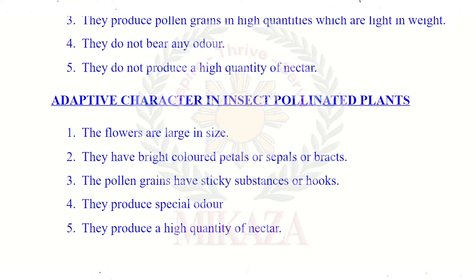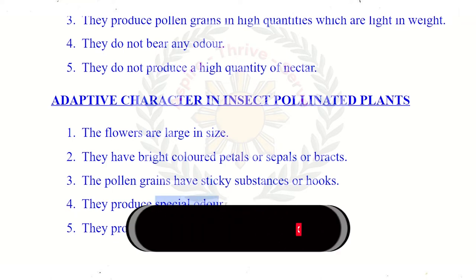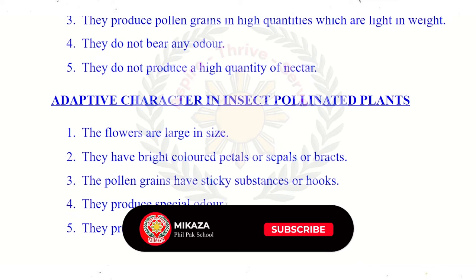For insect pollination, the plants have large and beautiful flowers. The pollen grains have a sticky surface so they can easily attach to insects. These plants produce nectar and have a special odor or smell. These features attract insects to their flowers.